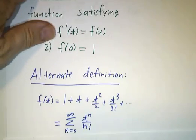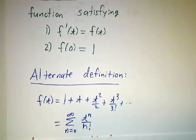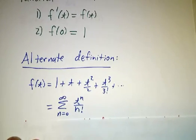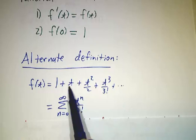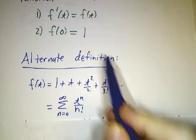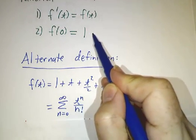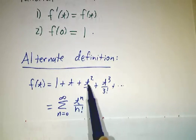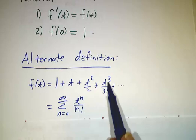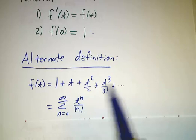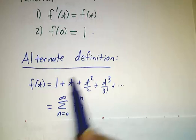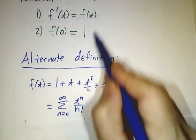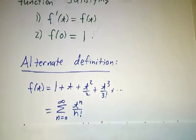And an alternate definition is with a power series. And how do you know that they're equivalent? Well if you plug in 0 into the power series, you get 1 plus 0 plus 0 squared plus 0 cubed, that's 1. That works. And if you take the derivative of the power series, derivative of t is 1, derivative of t squared over 2 is t, derivative of t cubed over 6 is t squared over 3 and so on. So this definition, this function given by this power series satisfies these two conditions. So the two definitions are equivalent.